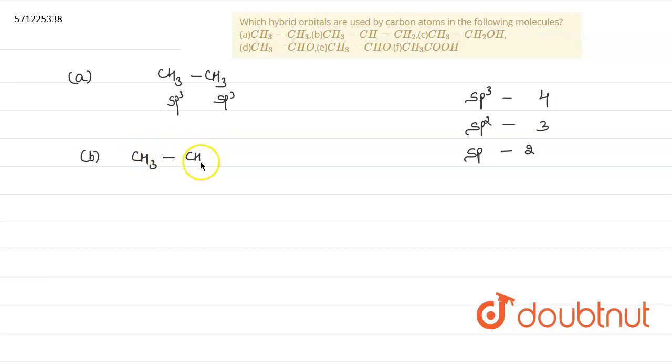Here is CH3-CH double bond-CH2. In this case, when we write this, this carbon atom has three sigma bonds with this. That's why this carbon atom forms SP2 hybridization state.